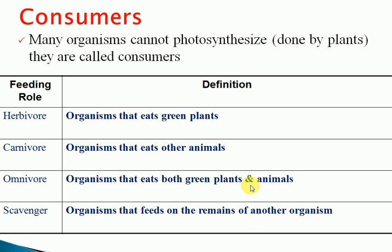Next is scavengers — organisms that feed on the remains of another organism. So consumers are of four types: herbivores, carnivores, omnivores, and scavengers.